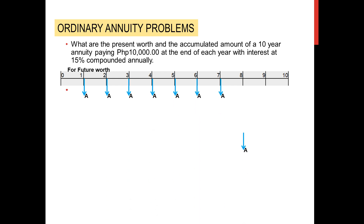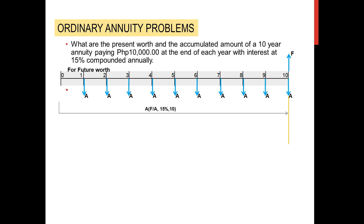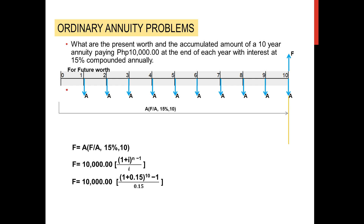For the future worth under the same conditions, with A equal to 10,000 pesos, we apply the notation A times F given A, 15%, 10 periods. Applying the uniform series compound amount factor formula: F = 10,000 times [(1 + 0.15)^10 - 1] / 0.15. Those annuities accumulate to a future amount of 203,037.18 pesos.